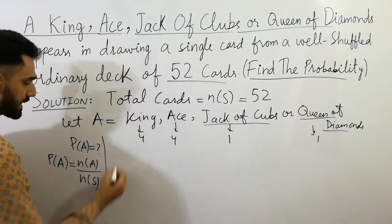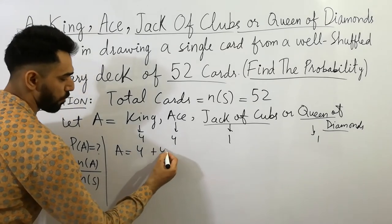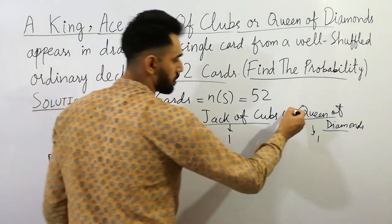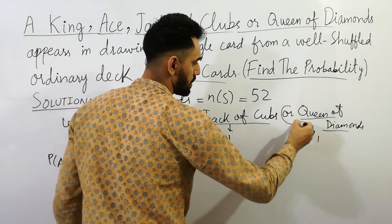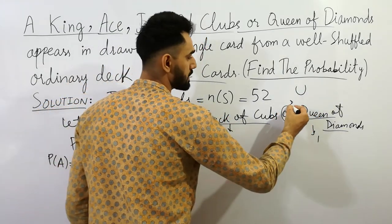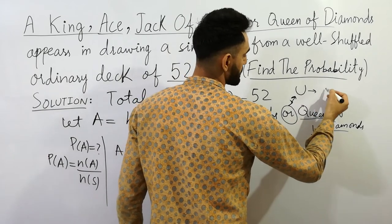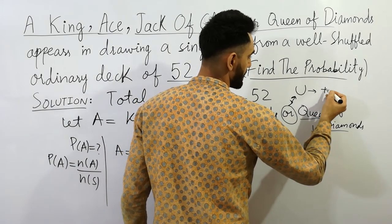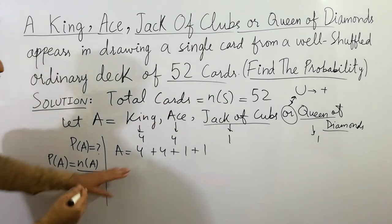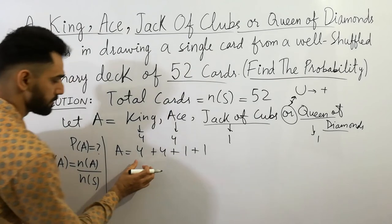So you can easily calculate the value of A. A is equal to four plus four plus one plus one. You know that 'or' represents the union, and union always represents the addition. So here this is the law of addition applied here.